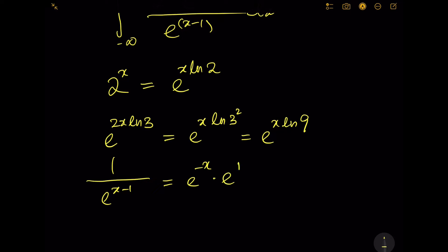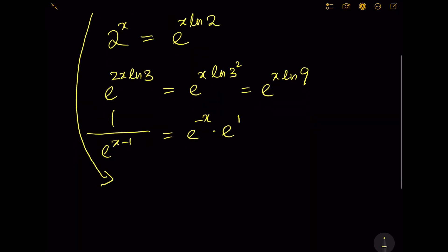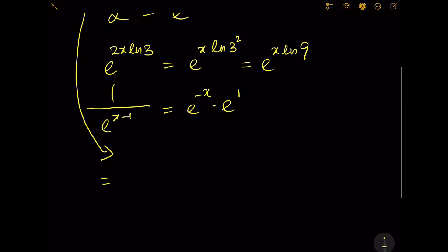And then we're going to replace these into the integral, so it becomes the integral from negative infinity to 0 of e^(x ln 2) times e^(x ln 9) times e^(-x) times e^1 dx.